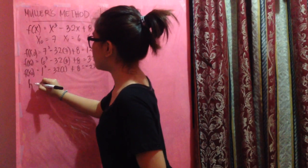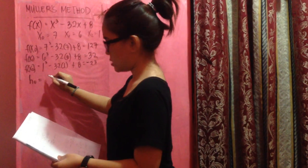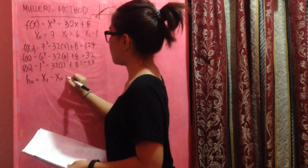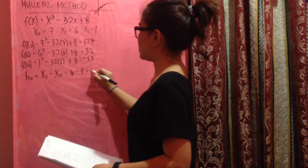We have to solve for the h₀, which is x₁ minus x₀. x₁, 6 minus 7 is negative 1.